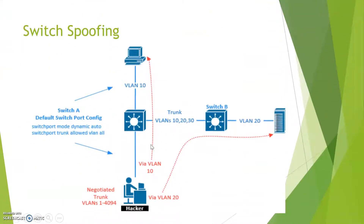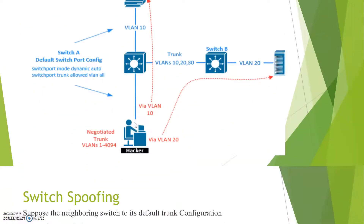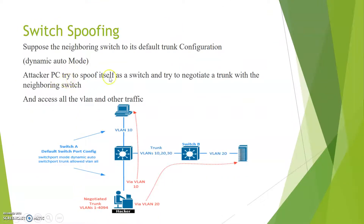Now let us discuss what switch spoofing is. Assume this is a neighboring switch and the engineer has left the port at its default configuration — default trunking mode dynamic auto, trunk allowed all VLANs — without connecting anything to it. In such a scenario, an attacker PC can spoof itself as a switch and negotiate a trunk with the neighboring switch. Since the trunk is allowed all VLANs, the attacker can easily access all other VLAN traffic.